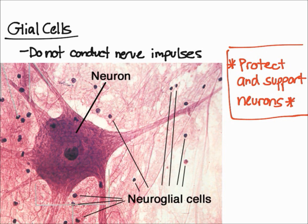One important thing about neurons is that they detect stimuli, respond, and transmit information very quickly. This is clearly seen when you touch something hot — you feel it almost immediately. The impulse travels really quickly for you to realize that you're touching something hot.